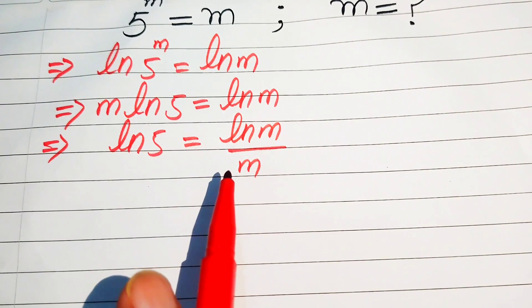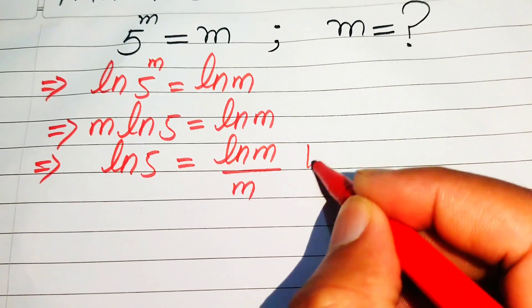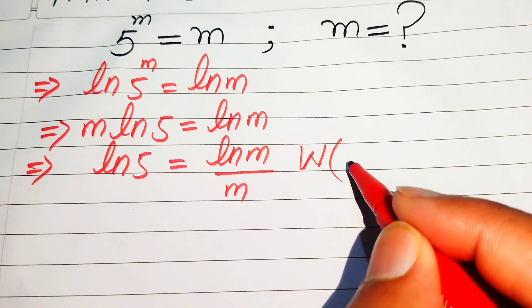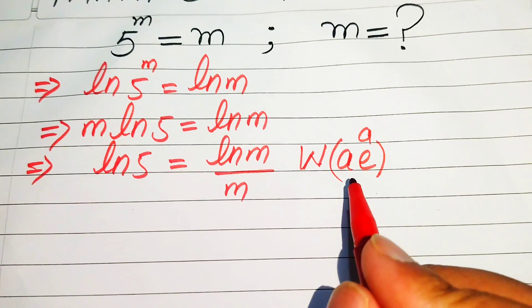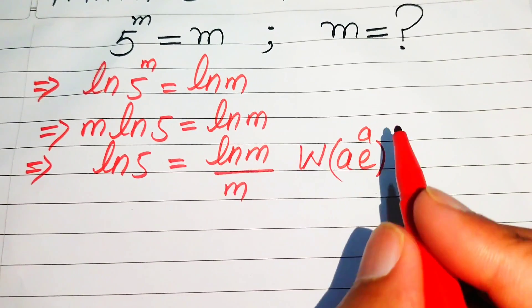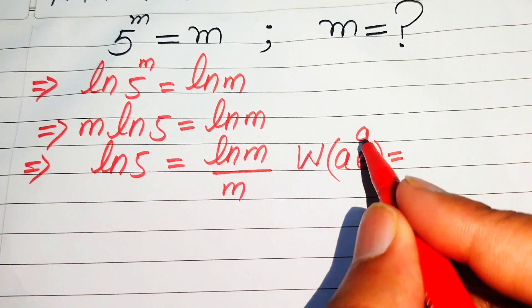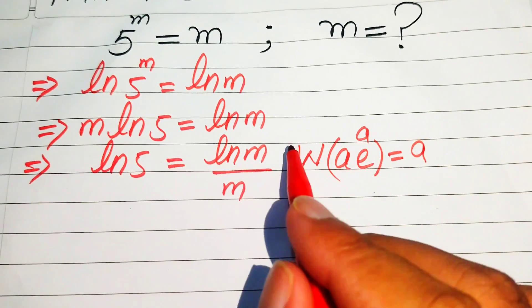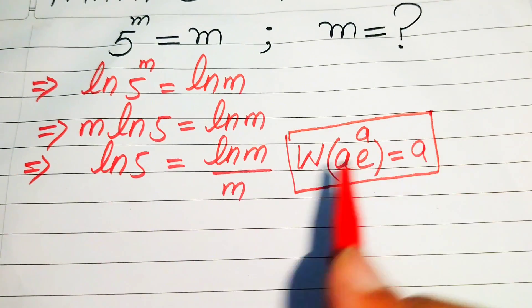Now we use the Lambert W function in order to solve this problem. The Lambert W function is defined as: W of (a times e to the power of a) equals a. So when you apply the Lambert W function on this type of expression, the output is the exponent of e, which is a.